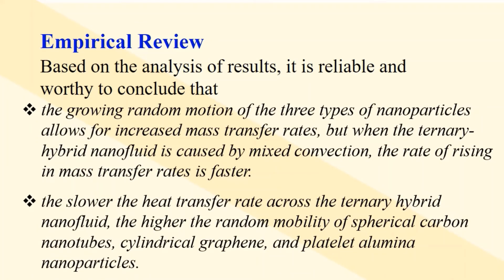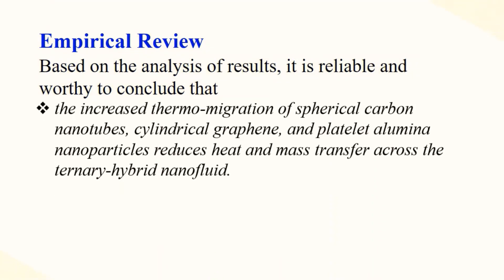(3) The slower the heat transfer rate across the ternary hybrid nanofluid, the higher the random mobility of spherical carbon nanotubes, cylindrical graphene, and platelet aluminum nanoparticles. (4) The increased thermomigration of spherical carbon nanotubes, cylindrical graphene, and platelet aluminum nanoparticles reduces heat and mass transfer across the ternary hybrid nanofluid.